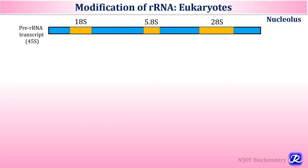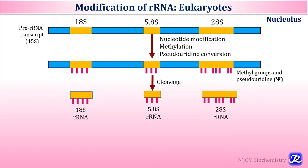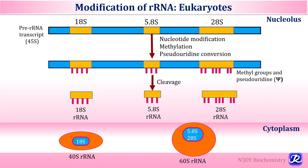The pre-rRNA transcript is 45S and it undergoes nucleotide modification, methylation and pseudouridine conversion. After cleavage, separate ribosomal RNAs — 18S, 5.8S and 28S — are formed in the nucleolus and then transported to the cytoplasm. The 18S rRNA becomes part of the 40S small subunit, while 5.8S and 28S become part of the 60S large subunit. The 5S rRNA, synthesized separately by RNA polymerase 3, also joins the 60S subunit.